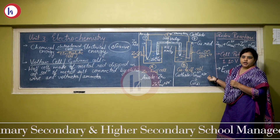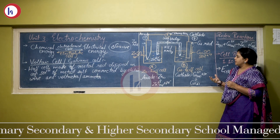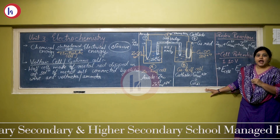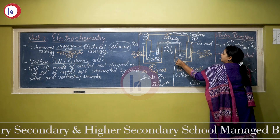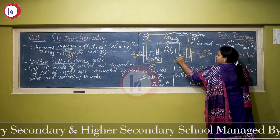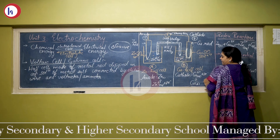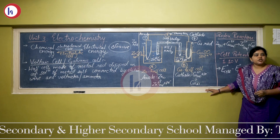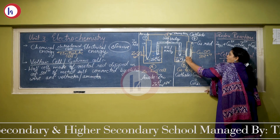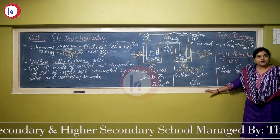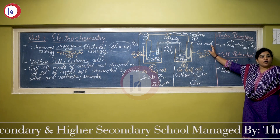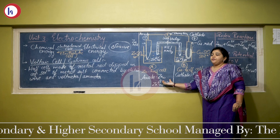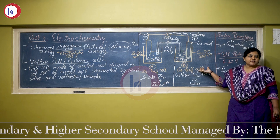In the copper half cell, after some time it was observed that the weight of the copper electrode increased. It was concluded that the Cu²⁺ ions present in the solution along with the sulphate ions underwent reduction. That is, they accepted the electrons and copper was found deposited on the copper electrode. That is how the weight of the copper rod increased. Hence, in the zinc half cell oxidation occurs, and in the copper half cell reduction occurs.